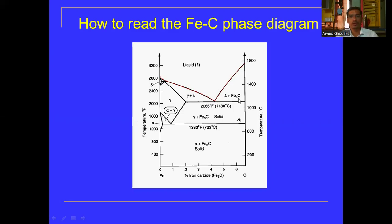On the other side, liquid plus cementite phase exists. The last reaction is the eutectoid reaction, where at 0.8 percent carbon, austenite gets converted into two solids — alpha plus Fe3C — which is pearlite. The range up to 2 percent carbon is for steel, and 2 to 6.67 percent carbon is for cast iron. Different types of steel are obtained from 0.008 percent to 2 percent carbon, and different types of cast iron from 2 percent to 6.67 percent carbon.